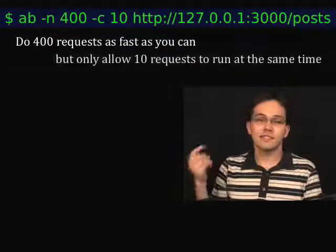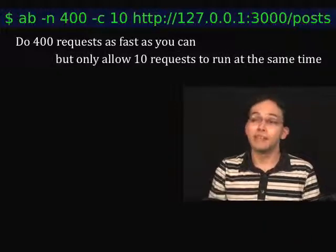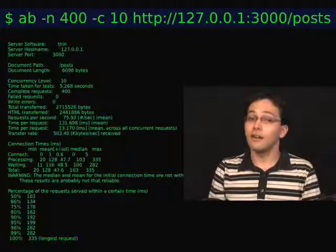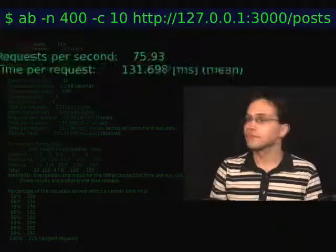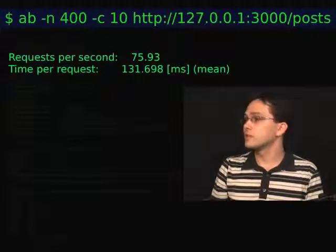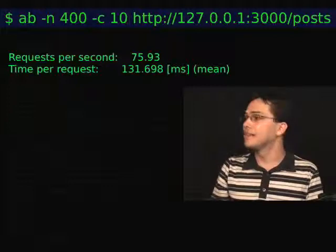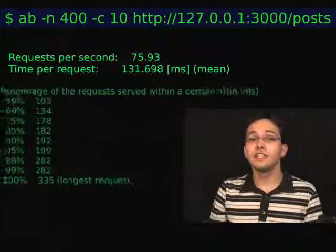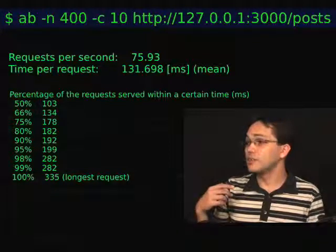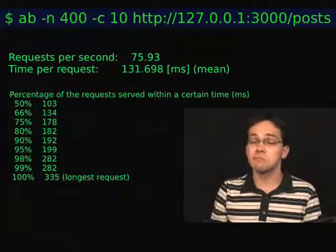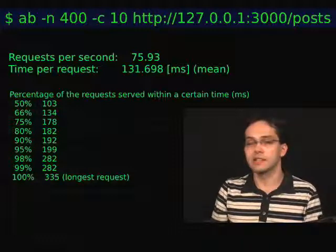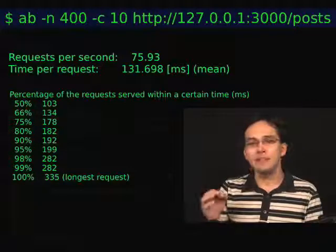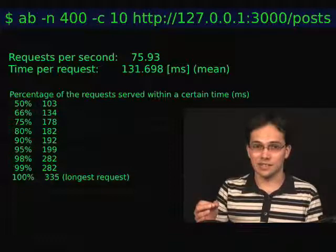Now obviously doing three requests only one at a time isn't really putting a heavy load on our web server. So what might be a more realistic command? We might say do 400 requests as fast as you can, but only allow 10 requests at the same time. Here is the output we might get. Let's look at the important bits. First, this is showing us requests per second — our server was able to do 75.93 requests per second, not bad. And the time it took for each request to get to the server and come back was 131 milliseconds. The other interesting bit is these percentages: 50% of the requests came back within 103 milliseconds, and the longest request took 335 milliseconds. We probably want to keep an eye on these numbers — it's probably not acceptable if a request takes more than three or four seconds, maybe even less.